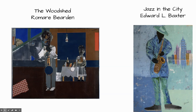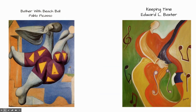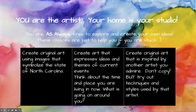Again you can see Baxter's work on the right and the work of Romare Bearden on the left, and you can see that collage influence that has come from Romare Bearden's work. And last, look at this one again with Baxter on the right and Picasso on the left — look at the colors, the lines, the shapes, the movement, and you can see where that influence from Picasso is seen in Baxter's work.